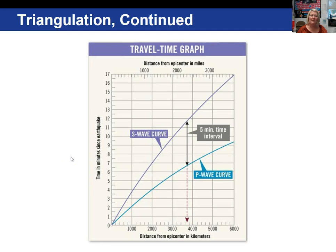Taking the P minus S wave interval for New York — five minutes — I measure five minutes of time between the P wave curve and the S wave curve on the travel time graph. Projecting directly down to the distance scale, we see that the distance is approximately 3,700 kilometers from the epicenter.